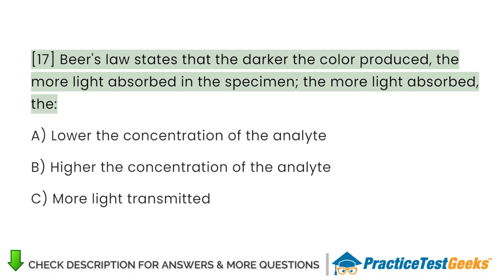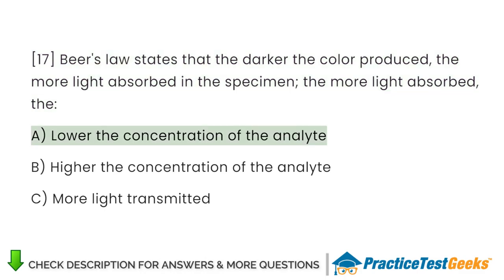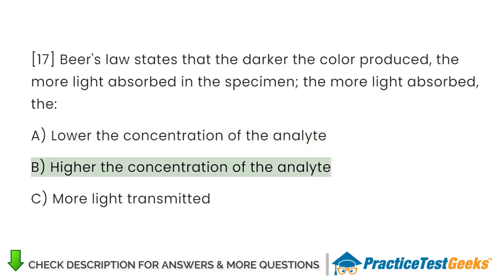Beer's law states that the darker the color produced, the more light absorbed in the specimen. The more light absorbed, the: A. Lower the concentration of the analyte. B. Higher the concentration of the analyte. C. More light transmitted.